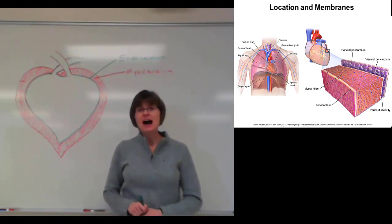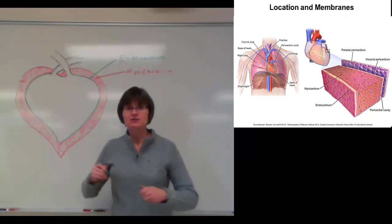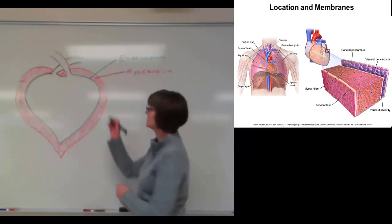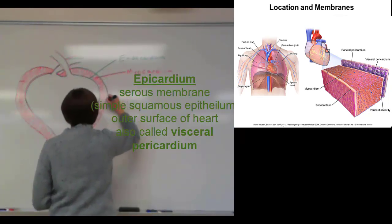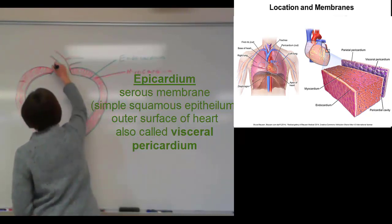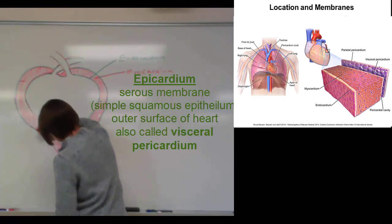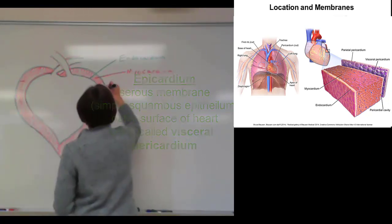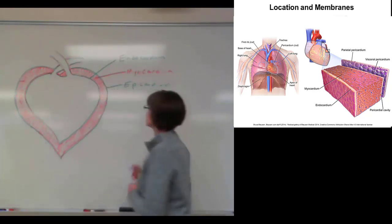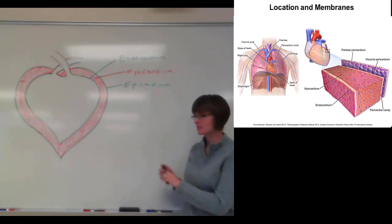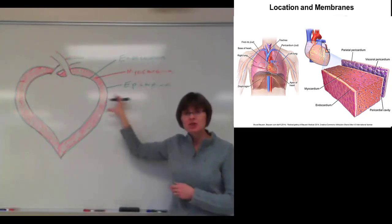The serous layer on the outside of the heart is called the epicardium. Epi means over, so this is over the heart. I'm going to put in a layer of epicardium around the outside. Together, the endocardium, the myocardium, and the epicardium make up the heart wall.